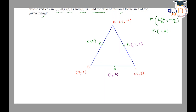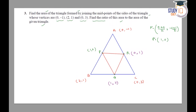Now, if we join points P, Q, and R, a triangle PQR is formed. In the first part, we have to find the area of triangle PQR.